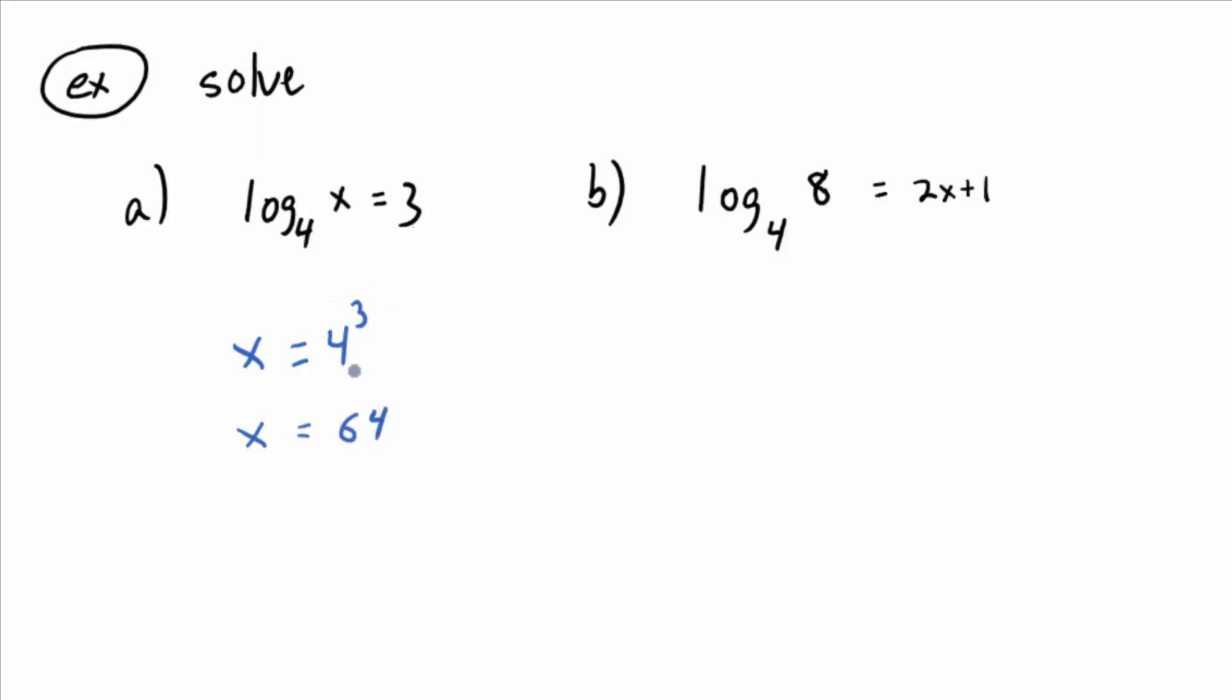64. If the exponent were really big, though, you'd just, like, if it were four to the tenth power. So if you had a ten here instead of three, you'd probably just leave it as four to the tenth.